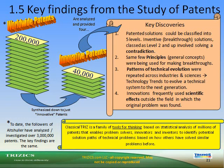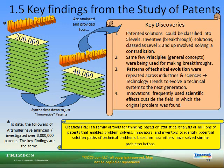Key findings from the study of patents: 200,000 patents were initially analyzed and synthesized down to 40,000 innovative patents. Patent solutions could be identified into five levels — inventive or breakthrough solutions, classed as level 2 and up, involved solving a contradiction. The same few principles and general concepts were used for making breakthroughs. Patterns of technical evolution were repeated across industries and sciences. Innovations frequently use scientific effects outside the field of the original problem. Classical TRIZ is a family of tools based on statistical analysis of millions of patents, enabling problem solvers to identify solution paths based on how others solved similar problems before.